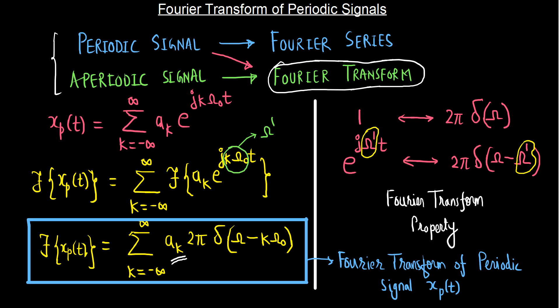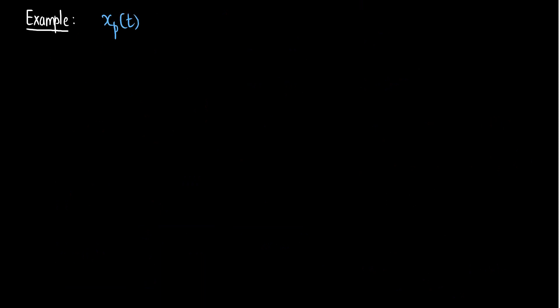Let's take an example. In order to obtain a Fourier transform, we must know the Fourier series coefficients first. Let's suppose the signal under consideration xp(t) is cos(ω₀t). Let's now find the Fourier series representation, that is the ak's, for this signal.